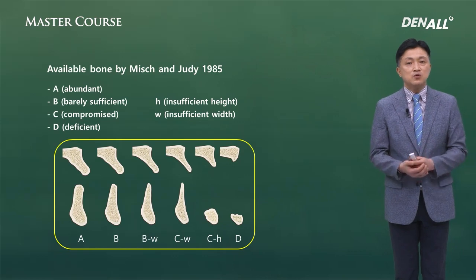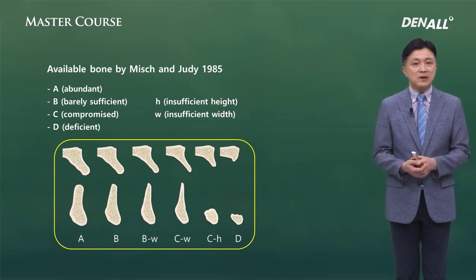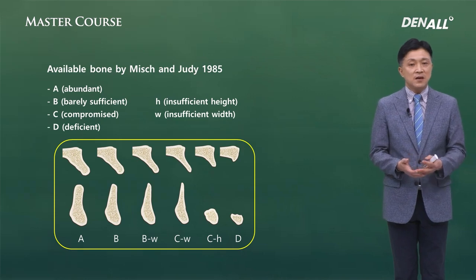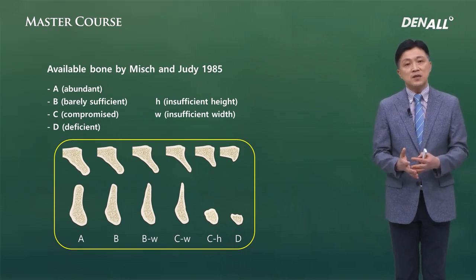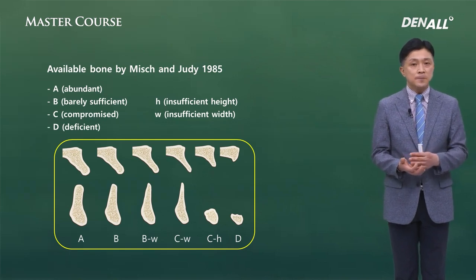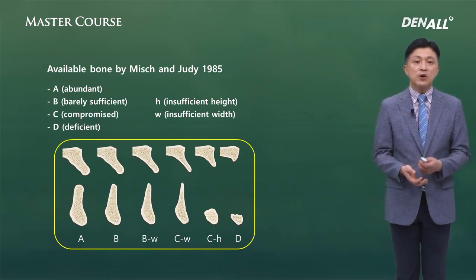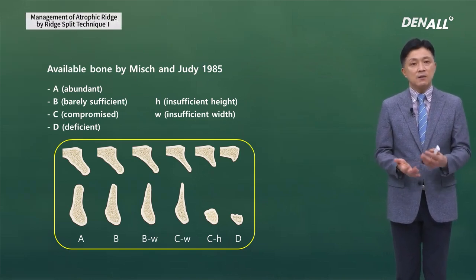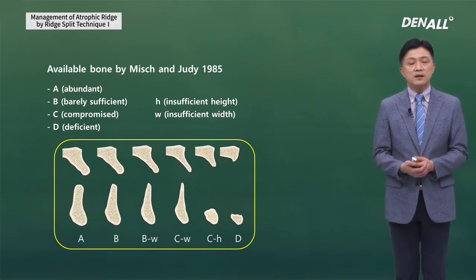Let's look at the category of available bone presented by Mission Judy. With time, there is horizontal bone resorption followed by vertical bone resorption, and in the end, basal bone is the only thing that remains. This is a physiological process that occurs.